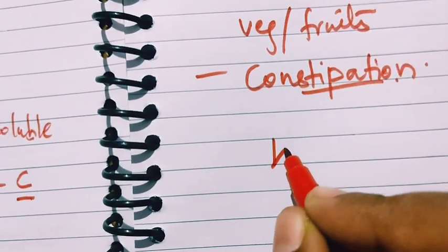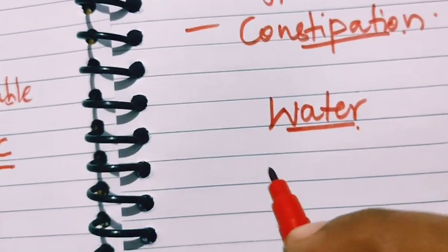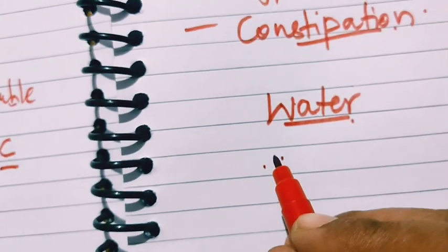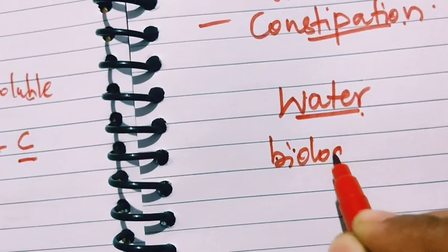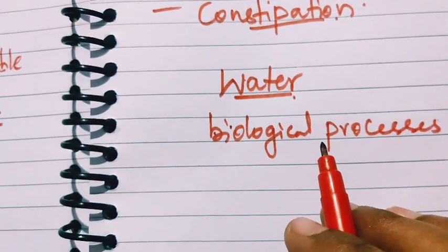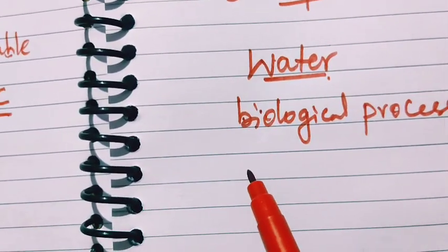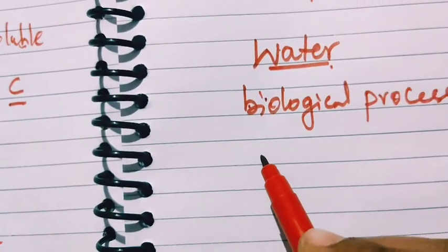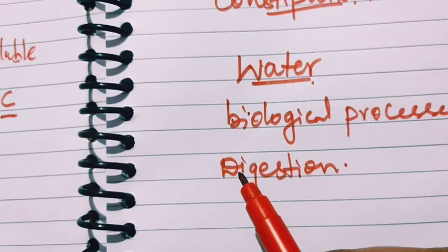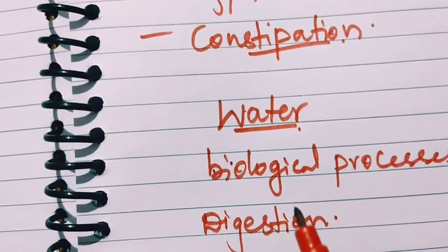Next is water. Water is a very essential constituent — it is a very important constituent of all body cells. Water is required for all the biological processes in our body. We have to drink a sufficient amount of water. Water makes the movement of food easy in the food pipe, and it helps in the digestion of food.